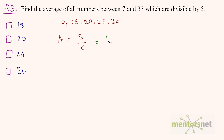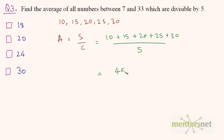Average equals sum divided by count. The sum is 10 plus 15 plus 20 plus 25 plus 30, divided by 5 numbers. 10 plus 15 is 25, plus 20 is 45, plus 25 plus 30 is 100, divided by 5, which is 20. So the answer is Option B.